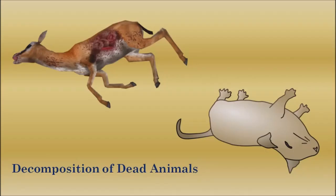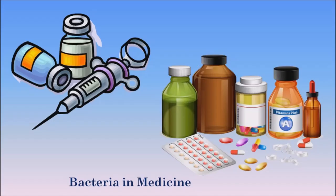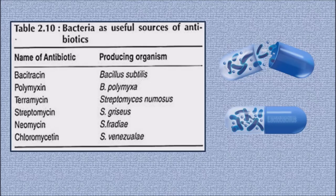The next use is decomposition of dead animals. Some bacteria are able to decompose dead organic matter into inorganic form, which mixes with soil and increases soil fertility. These inorganic substances are then absorbed by plants as nutrients. The next use is bacteria in medicine. Bacteria are the sources of different antibiotics, serum and vaccines. Antibiotics are chemical substances secreted by microorganisms which inhibit the growth and development of other microorganisms. Antibiotics like Bacitracin, Polymyxin B, Terramycin and Streptomycin are of bacterial origin.